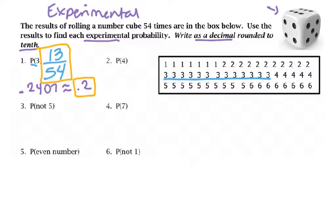For the probability of getting a 4, look at your 4s in the results — there are 5 of them out of 54. My chances are much less of getting a 4 than a 3, which theoretically doesn't make sense since they should be equal, but because of this experiment I have a different probability. I put 5/54 in the calculator and get 0.09, which rounds to 0.1 for the nearest tenth.